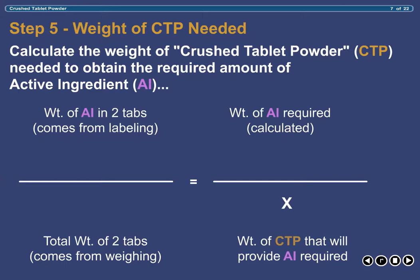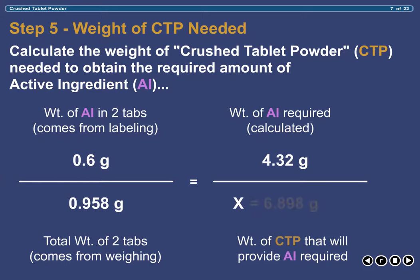In our example, the weight of active ingredient in two source tablets is 600mg. The total weight of two source tablets is 0.958g. And the amount of active ingredient needed for our compound is 4.32g. Inserting these numbers into the formula and solving for X shows us that 6.898g of crushed tablet powder derived from the commercially prepared 300mg allopurinol tablets will provide the 4.32g of pure allopurinol needed to compound the prescription.